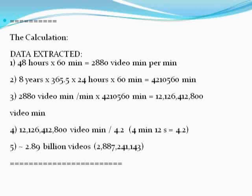So for every minute, that's 2,880 video minutes multiplied by 4,210,560 minutes — that is equivalent to the total video minutes, which is 12,126,412,800. Now what we want to do is divide by the average video length uploaded to YouTube. On average, the length is about 4 minutes and 12 seconds. We have to convert that into decimal, so it will be 4.2. So we're going to divide 12,126,412,800 by 4.2.